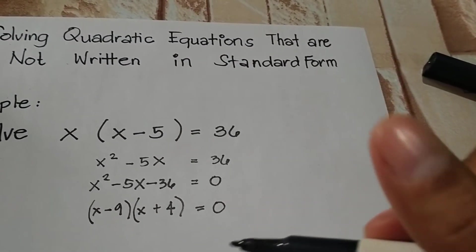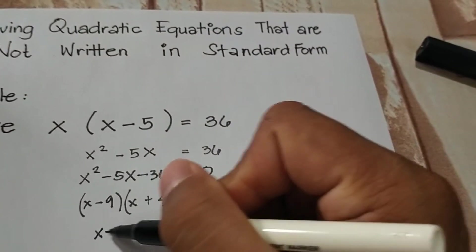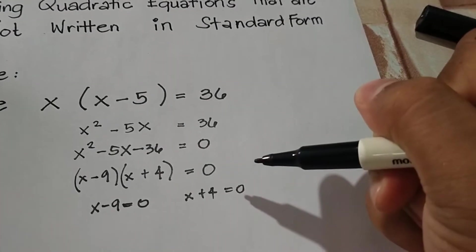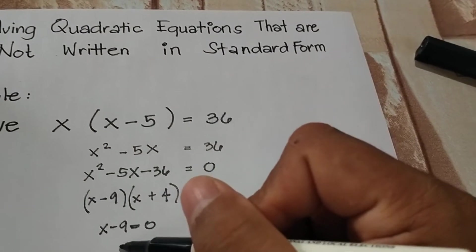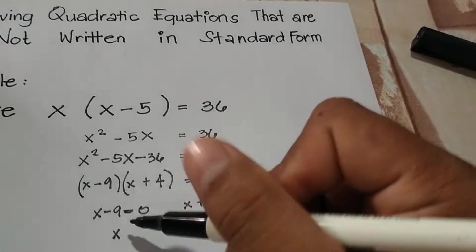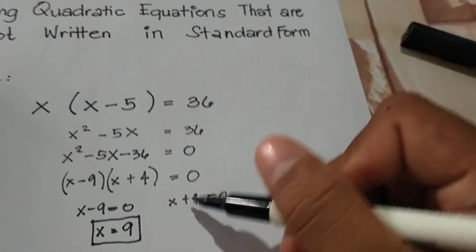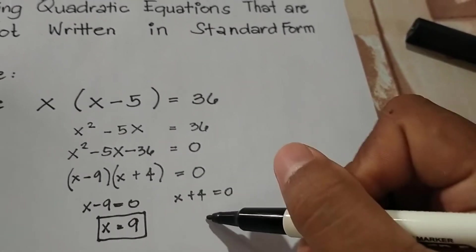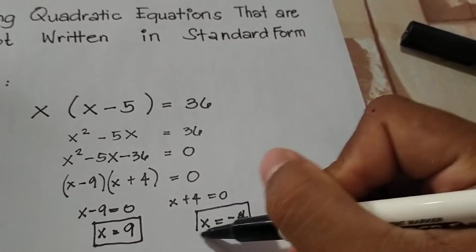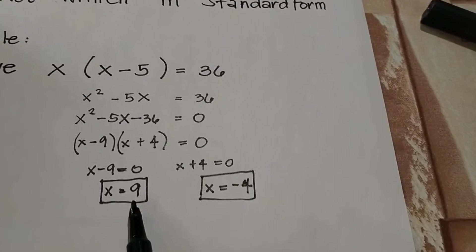Now proceed to the zero product property — each factor shall be equated to 0. So we have x minus 9 is equal to 0, and on the other side x plus 4 is equal to 0. Applying the addition property of equality, negative 9 transfers to give x equals positive 9. On the other side, positive 4 transfers to give x equals negative 4.